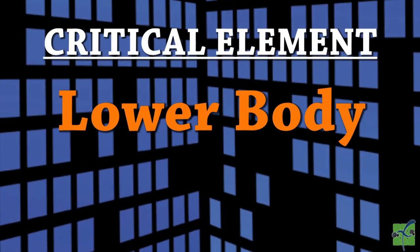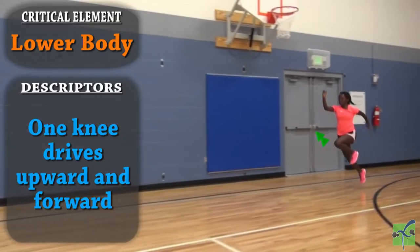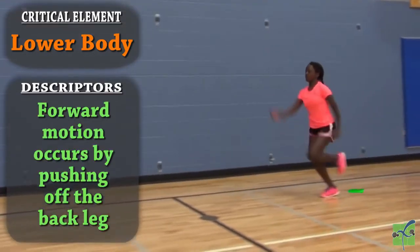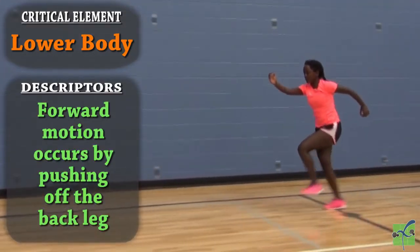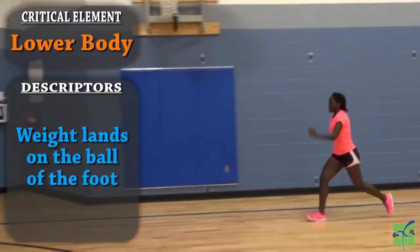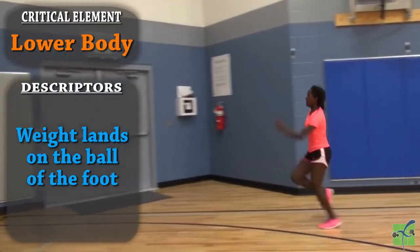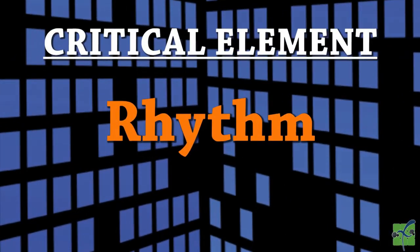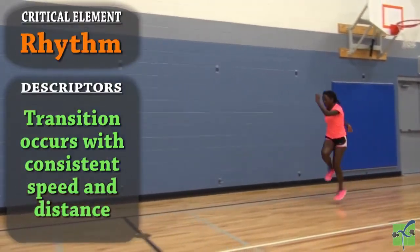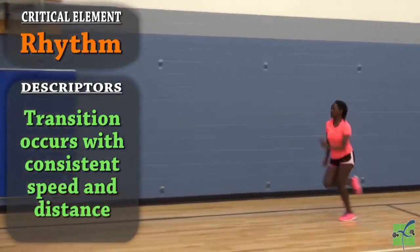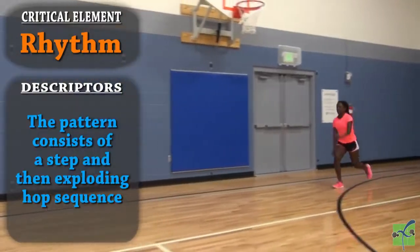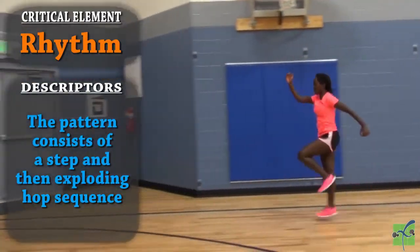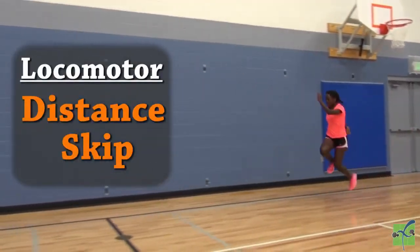For the lower body, one knee drives upward and forward, forward motion occurs by pushing off the back leg, and the weight lands on the ball of the foot. For rhythm, transition occurs with consistent speed and distance, and the pattern consists of a step and then an exploding hop sequence for the distance skip.